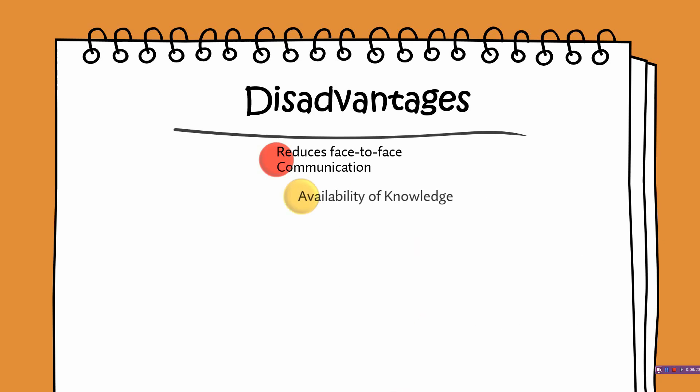Next comes availability of knowledge as a disadvantage. People can ask for information whenever they are in doubt; however, the answers may be given by unqualified persons with limited knowledge about the subject. This may be misleading and even confusing if contradictory data are given. If wrong data is provided over the internet, then we can receive wrong knowledge. So availability of knowledge is good, but sometimes it may be misleading.